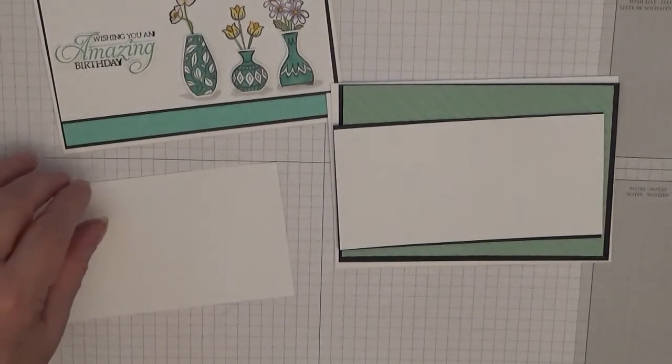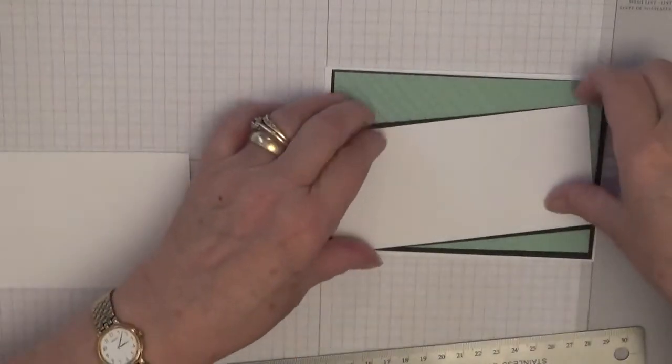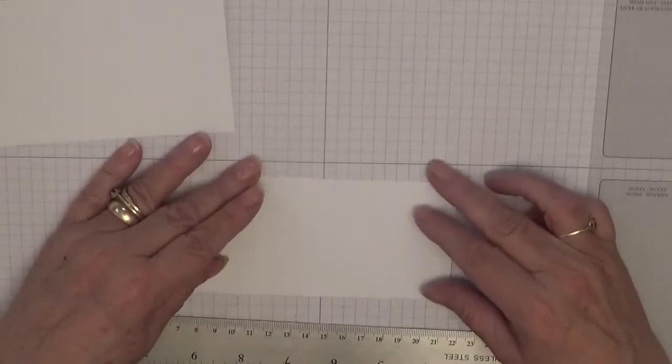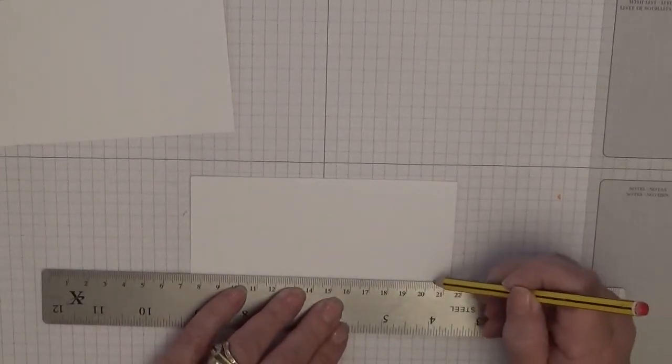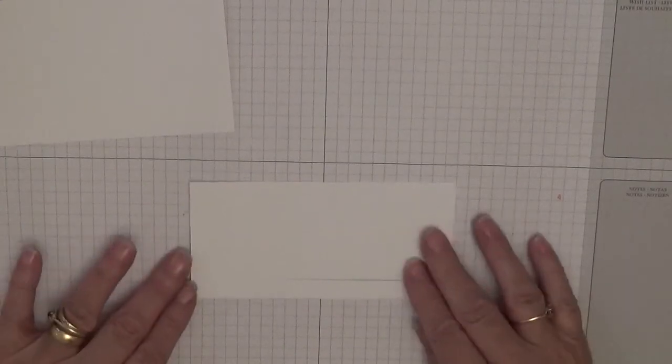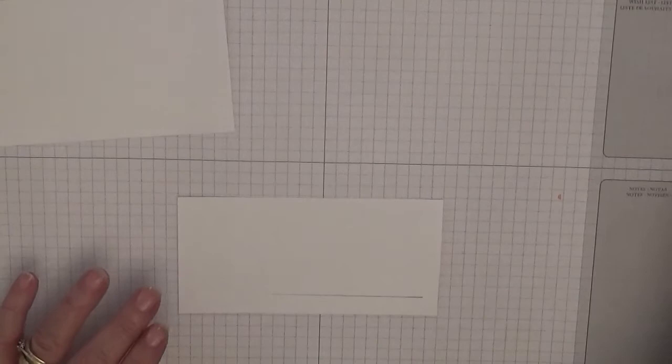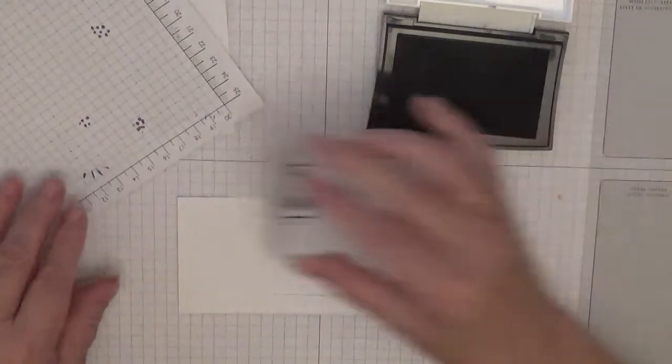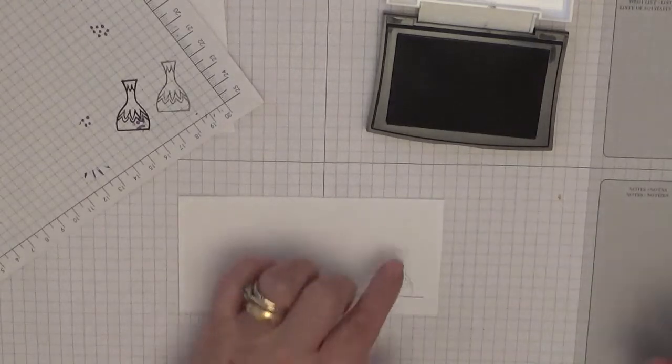To get started we need a pencil and a ruler and this white piece here. Put that on a straight line on my grid and I'm going to come up a little bit and just draw a line. That's just to guide me where to stamp the vases. All I want is a shadow just so I know where to put my flowers.